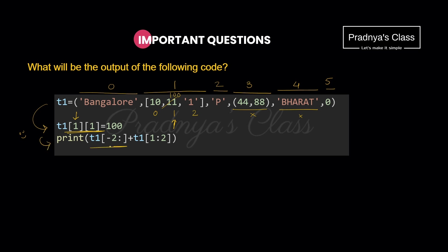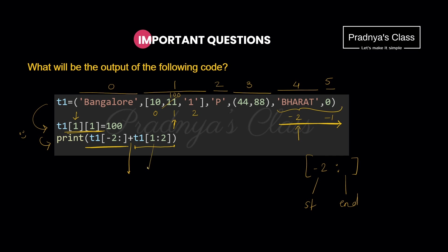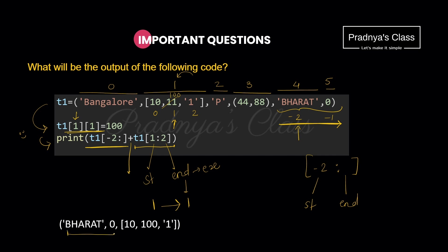Now look at the slicing. Using negative indexing: index -1 is the last element, -2 is second-to-last. The first slicing starts at -2 and goes to the end, giving two elements. The second slicing has starting and ending index both at 1, which is exclusive, so we access the element at index 1 — the whole list. Concatenating both slices gives the final output, and the list element was modified in place because it is mutable.